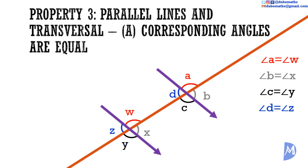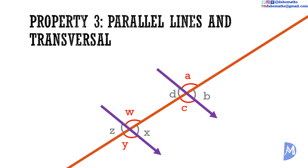I'll show you this proof in a separate video. Remember, when two lines intersect, the opposite angles — for example, A and C, and X and Z — are equal. Combining opposite angles and corresponding angles gives this diagram. We see that angles A, C, W, and Y all have the same size, and angles B, D, X, and Z have the same size.